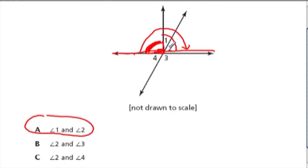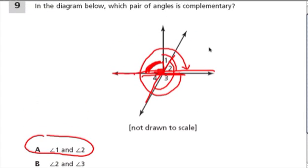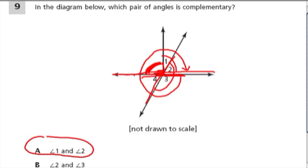Angles 2 and 3 are supplementary, because they are the two angles that make up this line right here. Angles 2 and 4 are equal — they're vertical angles. And 3 and 4 along this line have to add up to 180, so they're supplementary. But we're looking for complementary angles — in other words, angles that add up to 90 degrees.